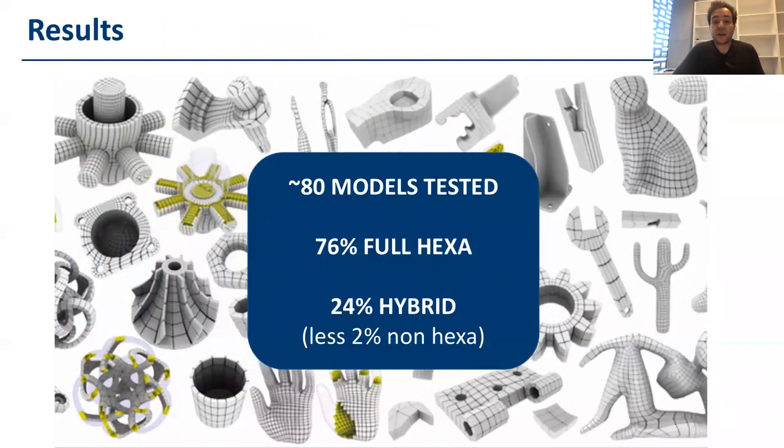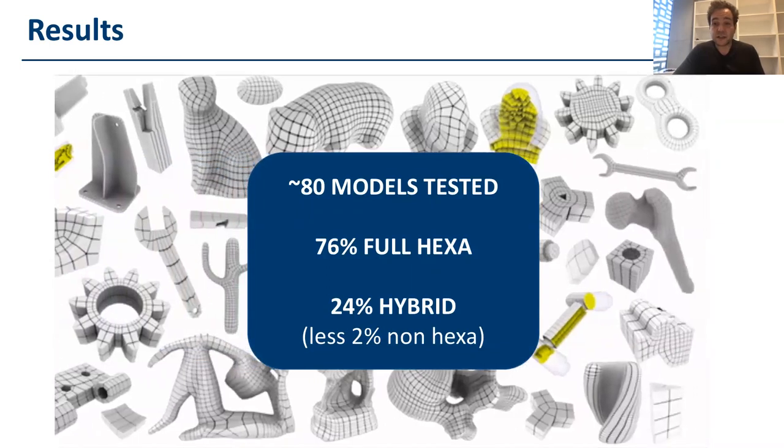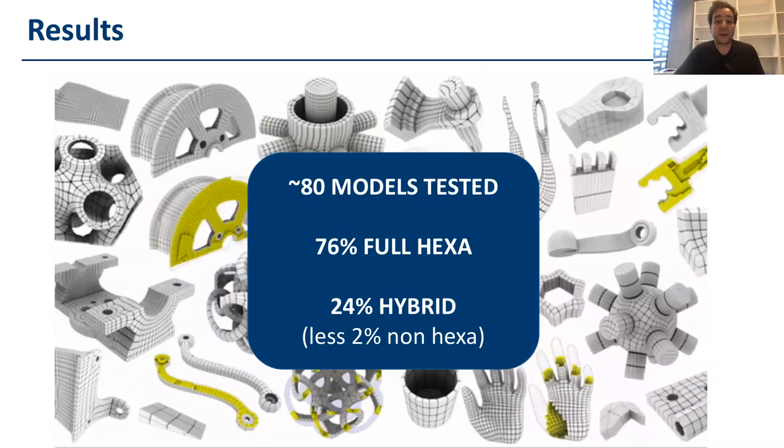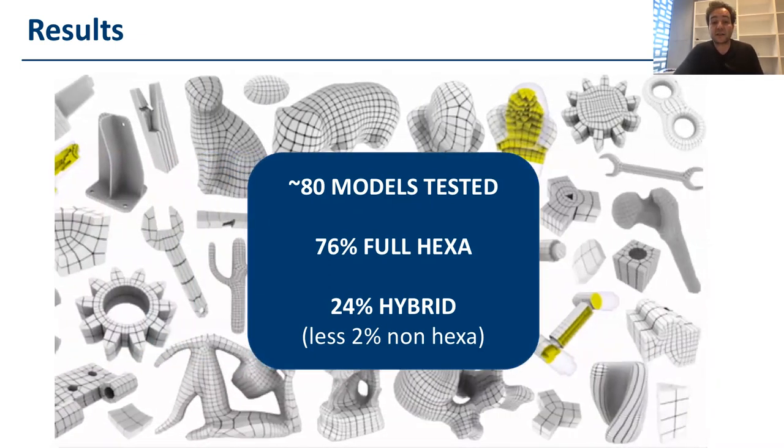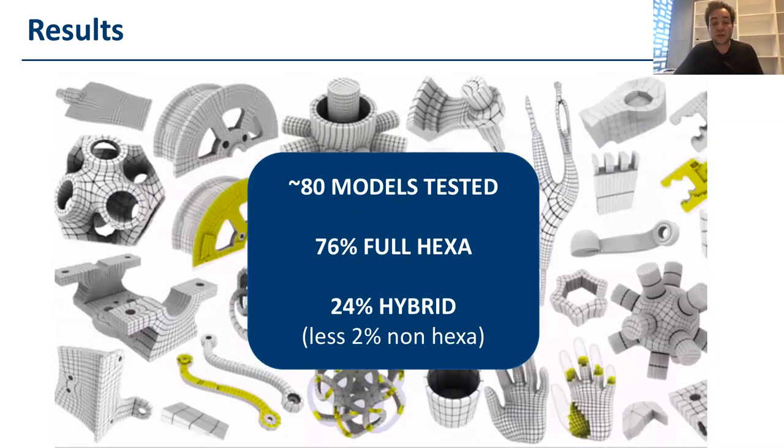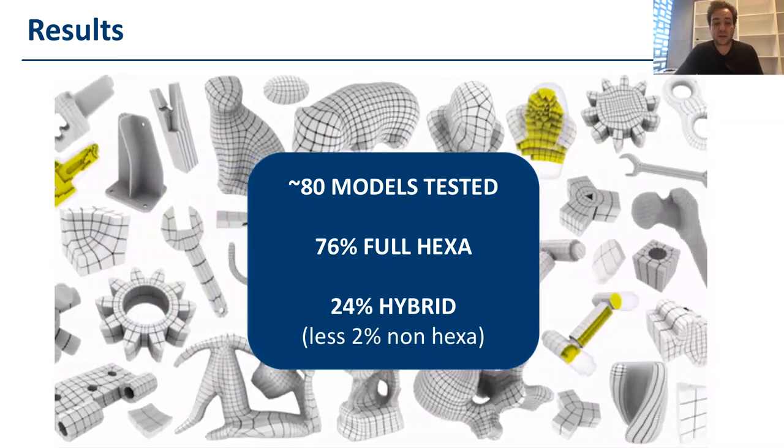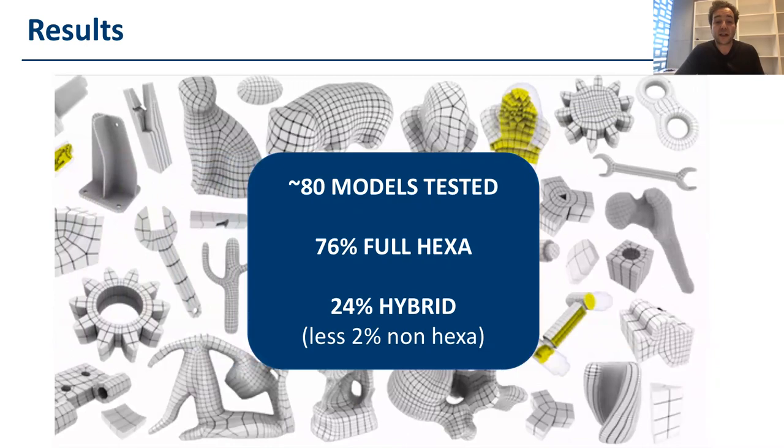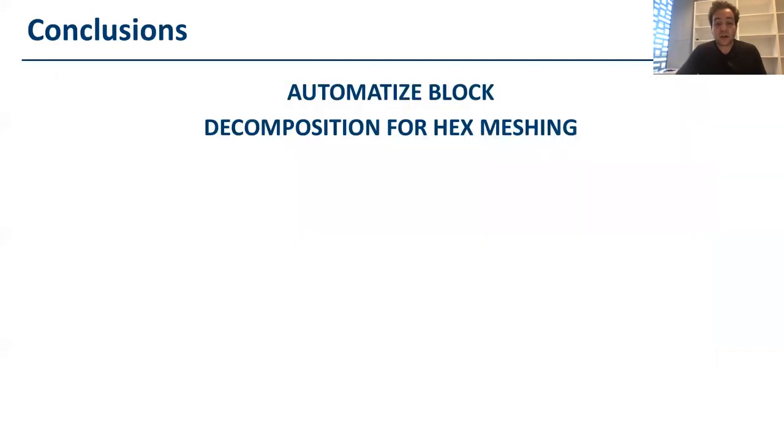So, in all our tests, we are able to produce hexahedral meshes in 76% of the total cases, and hybrid meshes for the remaining ones. And in case the meshes are hybrid, we only inserted like 2% of non-hex elements into the mesh. So, in terms of state-of-the-art, we obtained much better results in terms of non-hex elements inserted into the final shape.